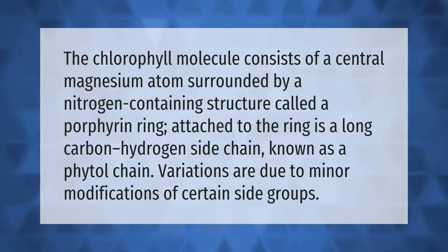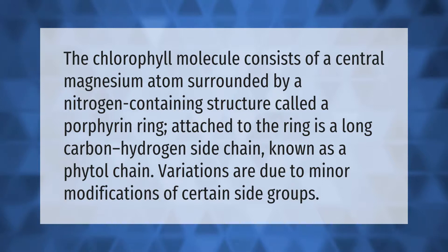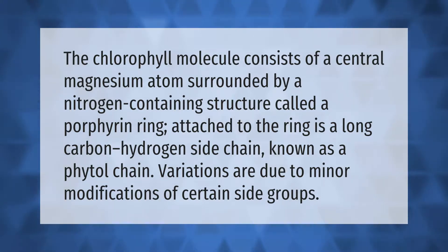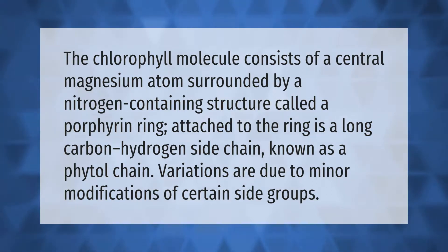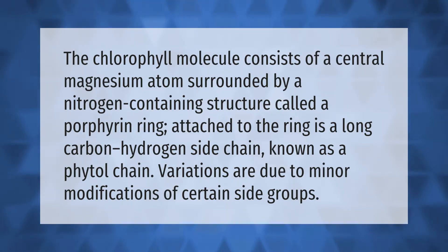The chlorophyll molecule consists of a central magnesium atom surrounded by a nitrogen-containing structure called a porphyrin ring. Attached to the ring is a long carbon-hydrogen side chain known as a phytol chain. Variations are due to minor modifications of certain side groups.